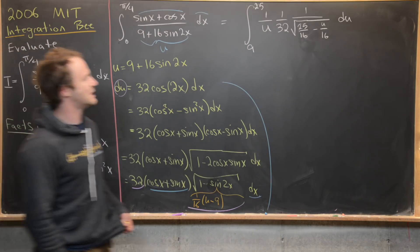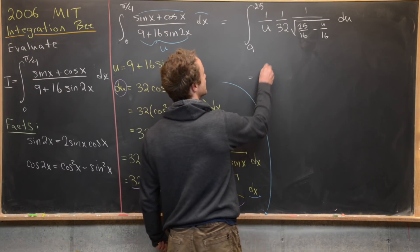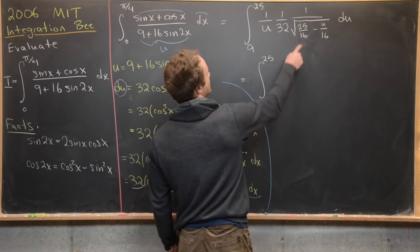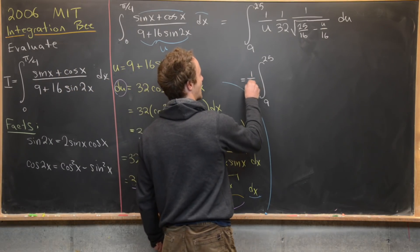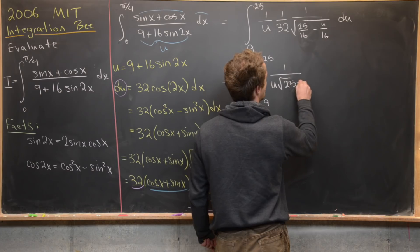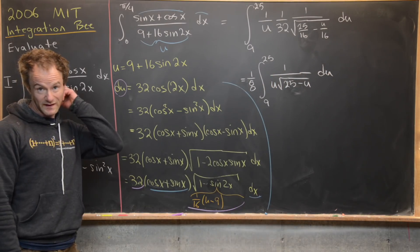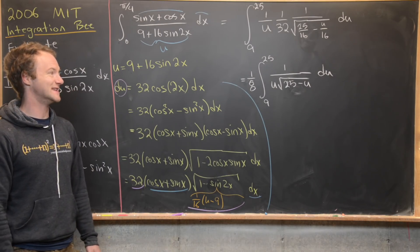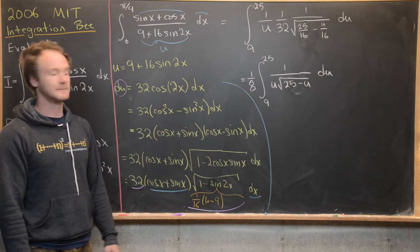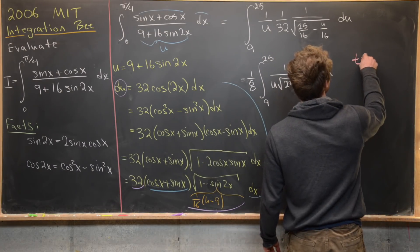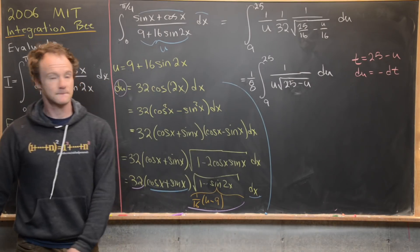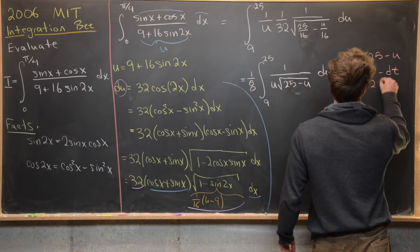We'd rather have the more complicated expression outside the radical instead of inside. So let's make another substitution: let t equal 25 minus u, which means du equals minus dt, and u equals 25 minus t.